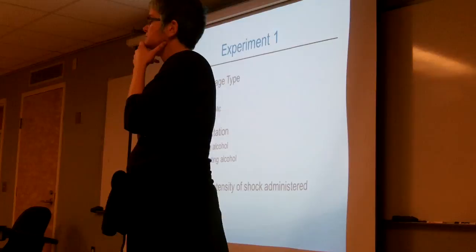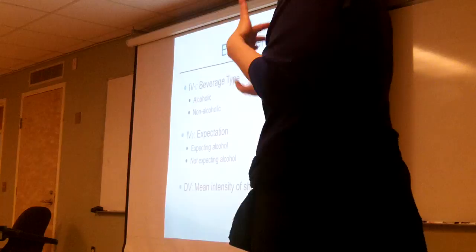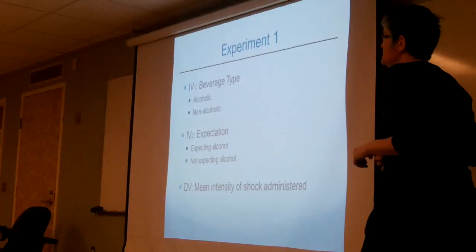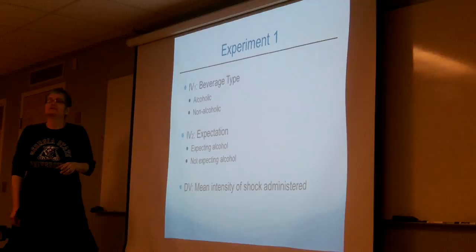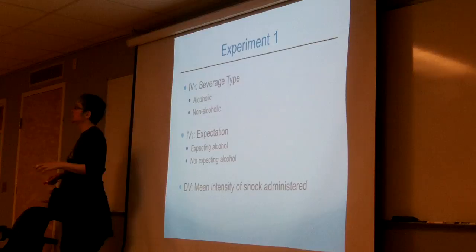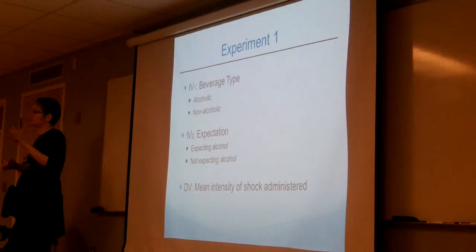Our dependent variable is the mean intensity of shock - how high an intensity of shock subjects are willing to give a confederate, depending on which condition they're in. Because both variables are between subjects with random assignment, everybody in each condition is different. We've got four conditions - two times two - four distinct groups of subjects.